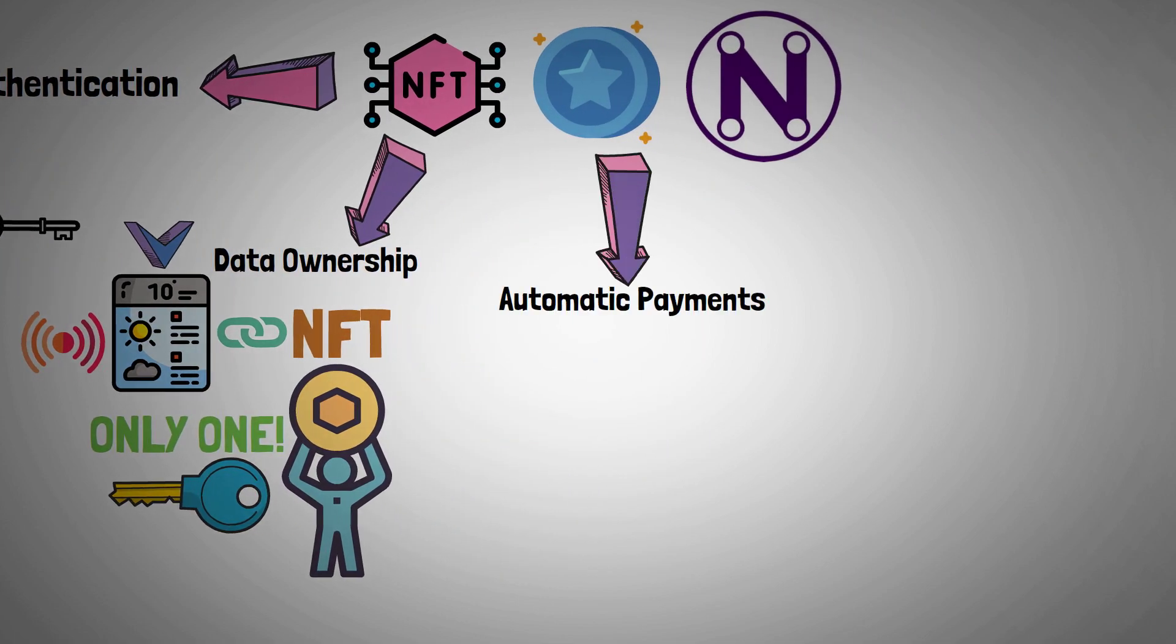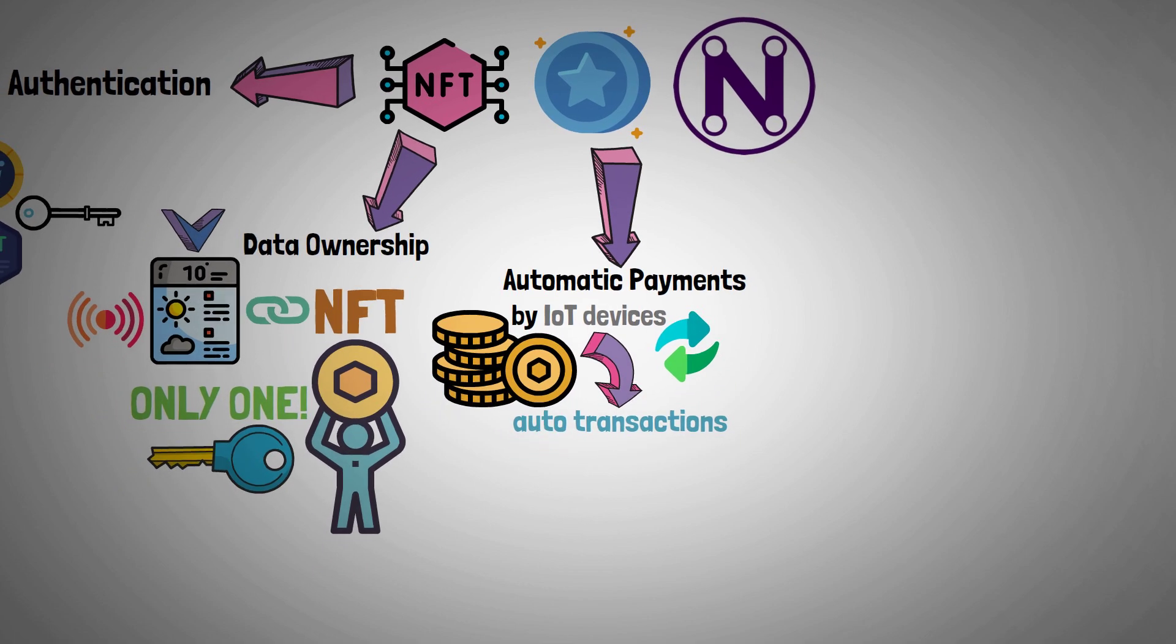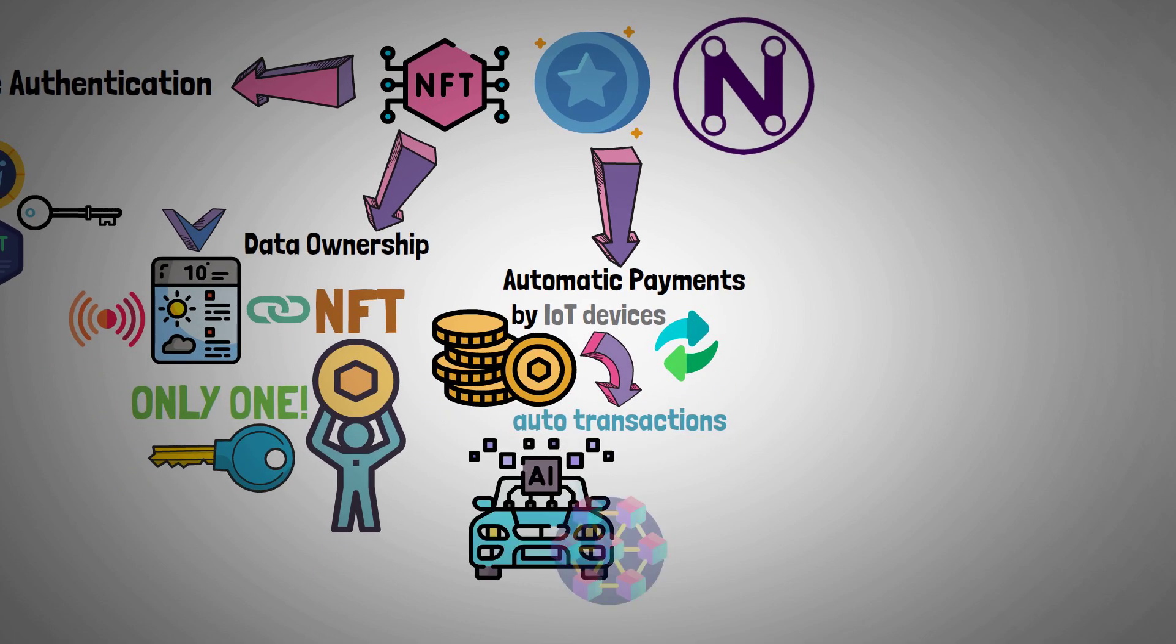Automatic Payments. Tokens can be used by IoT devices to perform automatic payments and transactions amongst one another. For instance, a self-driving car might use blockchain tokens to automatically pay for parking.